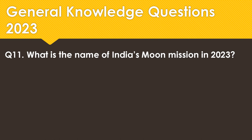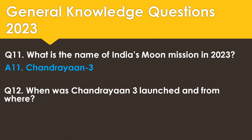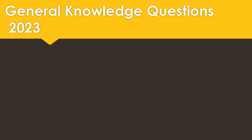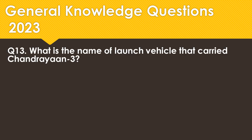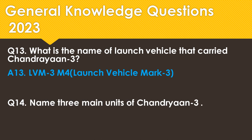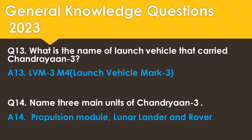What is the name of India's moon mission in 2023? The right answer is Chandrayaan 3. When was Chandrayaan 3 launched and from where? It was launched on 14th July 2023 from Satish Dhawan Space Centre, Second Launch Pad, in Sriharikota, Andhra Pradesh, India. What is the name of the launch vehicle that carried Chandrayaan 3? It is LVM3-M4. LVM stands for Launch Vehicle Mark 3. Name the three main units of Chandrayaan 3: first, the Propulsion Module; second, the Lunar Lander; and third, the Rover.